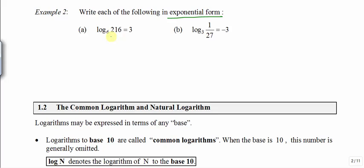To write this in exponential form, the number 216 will stay. The base 6 is going to move to the base position, and the 3 is going to move up at the same time to become the power. So 216 is equal to 6 to the power of 3, and we know this is correct.